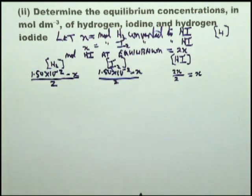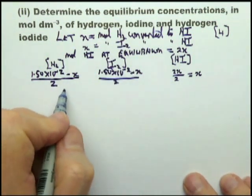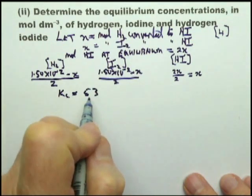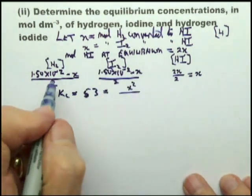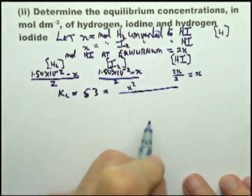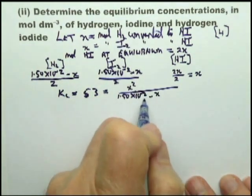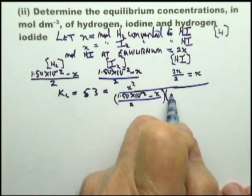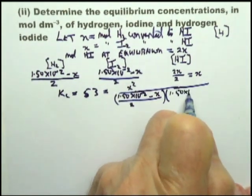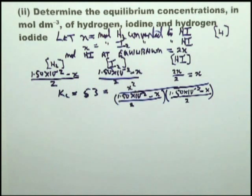So now we have everything. We have the concentrations, and we can put them into the equilibrium constant expression. So Kc equals - they tell us that's 53. And that equals [HI], so that's x² over concentration of hydrogen. It's (1.5 × 10⁻² minus x) / 2. We'll put down brackets. And then we do the I2, and that's 1.5 × 10⁻² minus x over 2.